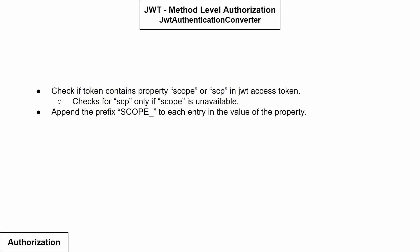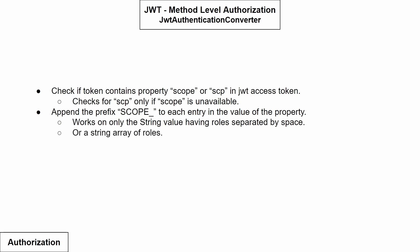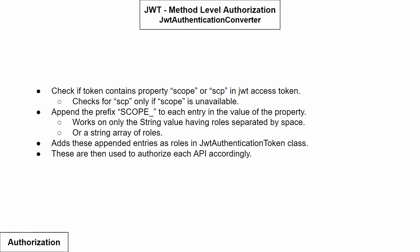From the property picked up, it reads all the values and appends the 'scope_' prefix string to each of those values. This works on string values where roles are separated by spaces, or roles present as an array of strings. Once this appending is done, it creates a JwtAuthenticationToken, adding the roles extracted from the access token, and this token is used to authorize incoming requests on specific APIs.